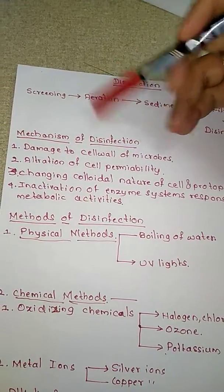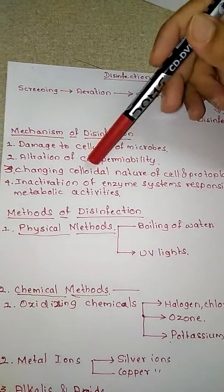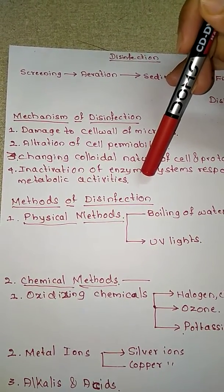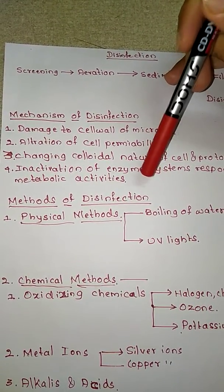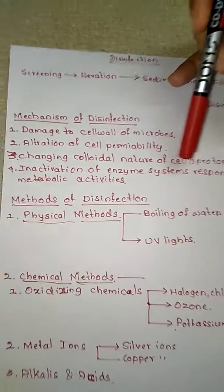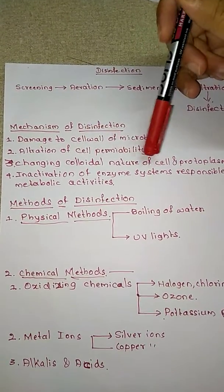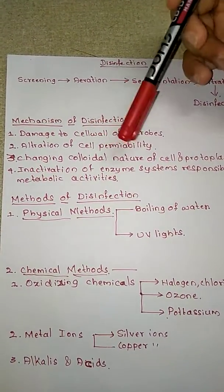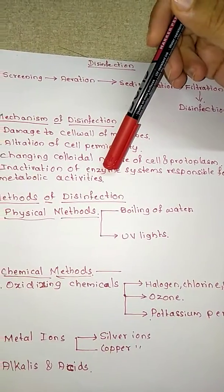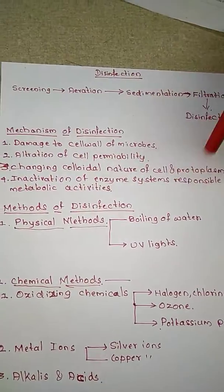Once the cell wall is disturbed, cell permeability is altered, and the colloidal nature of the protoplasm is changed, the metabolic activities required for microbial survival are disrupted. Cell permeability supplies all required nutrients to the microbes, so if we alter it, the microbes face a lack of food, their metabolic activity stops, and ultimately the microbes are killed.